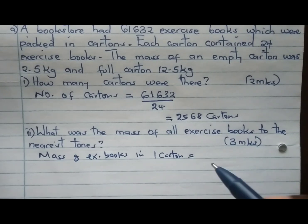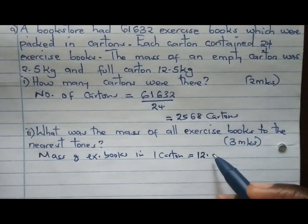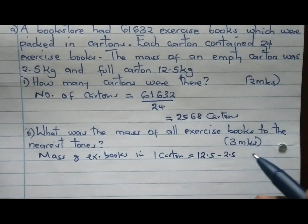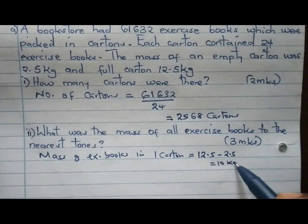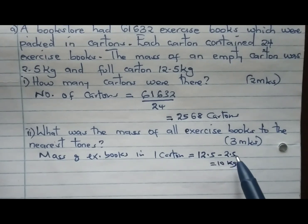To get the mass of exercise books in one carton, we take 12.5 minus 2.5, giving us 10 kg because the carton alone weighs 2.5 kilograms.